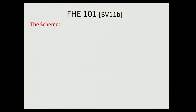Let me describe the scheme from the BV paper. Your secret key is an n-dimensional vector over Z_Q. Think of Z_Q not as a ring of integers modulo some ideal, but just as the integers in the segment [−Q/2, +Q/2]. Your ciphertext is also a vector over the same space. The key property is that the inner product of a ciphertext C and the secret key S equals the message M encrypted by C, plus 2 times small noise, plus Q times an integer I.